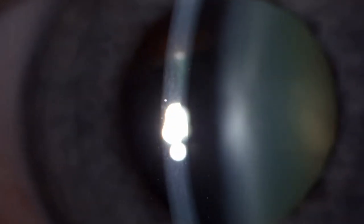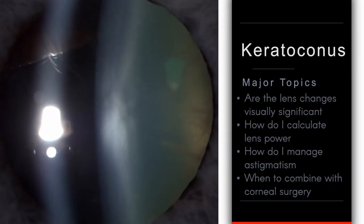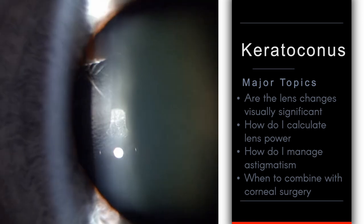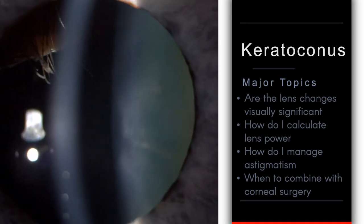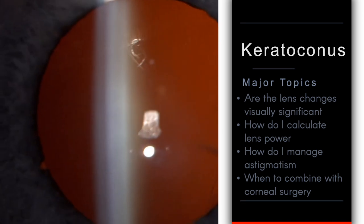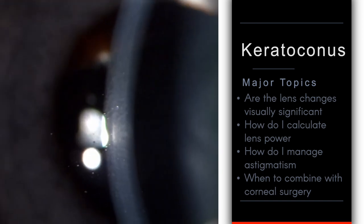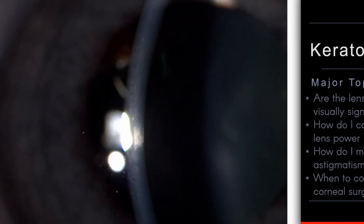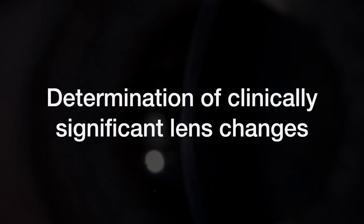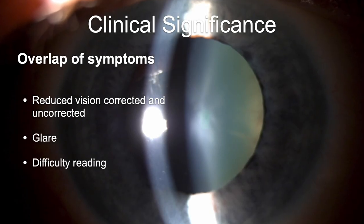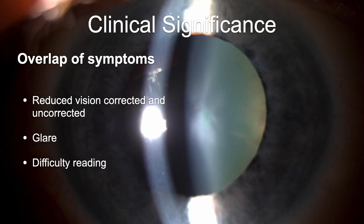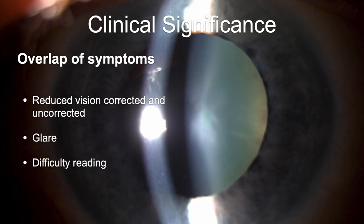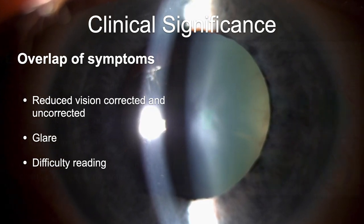Here's a patient with both keratoconus and a significant cataract. The major topics here are: are the lens changes visually significant? How do I calculate lens power? How do I manage the astigmatism? And do I need to combine this with a corneal transplant? There's so much overlap with difficulty reading, glare, and reduced vision.